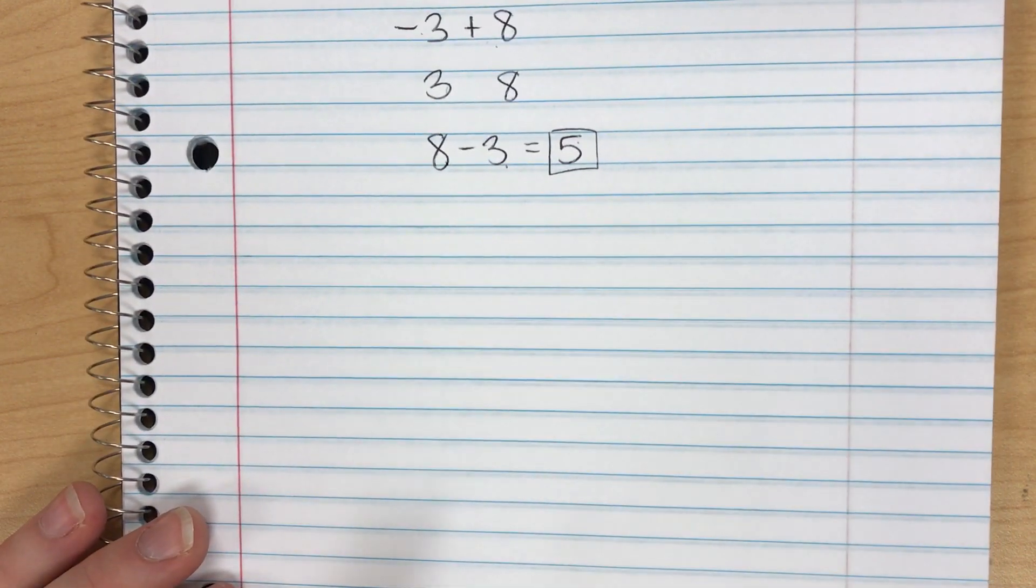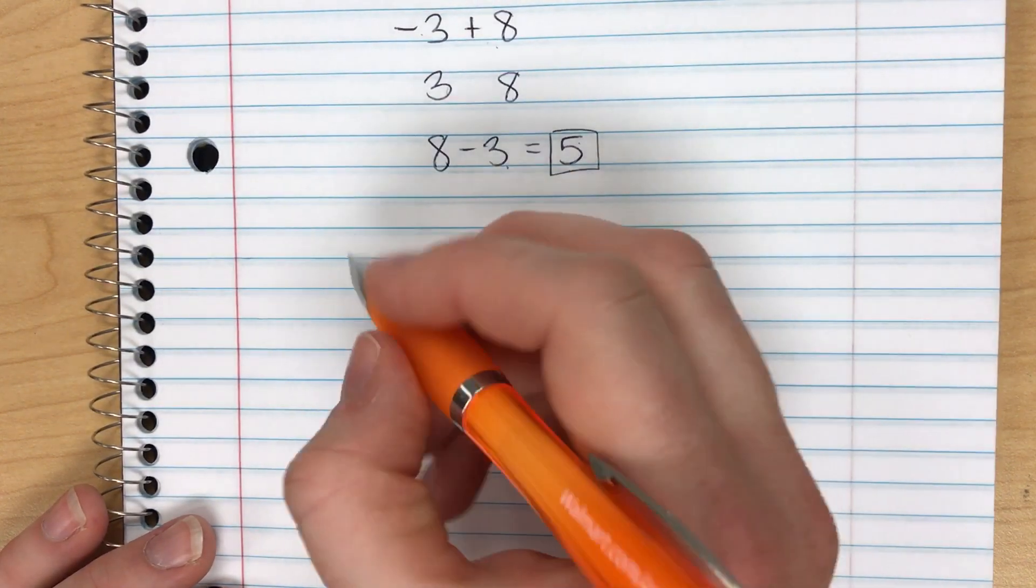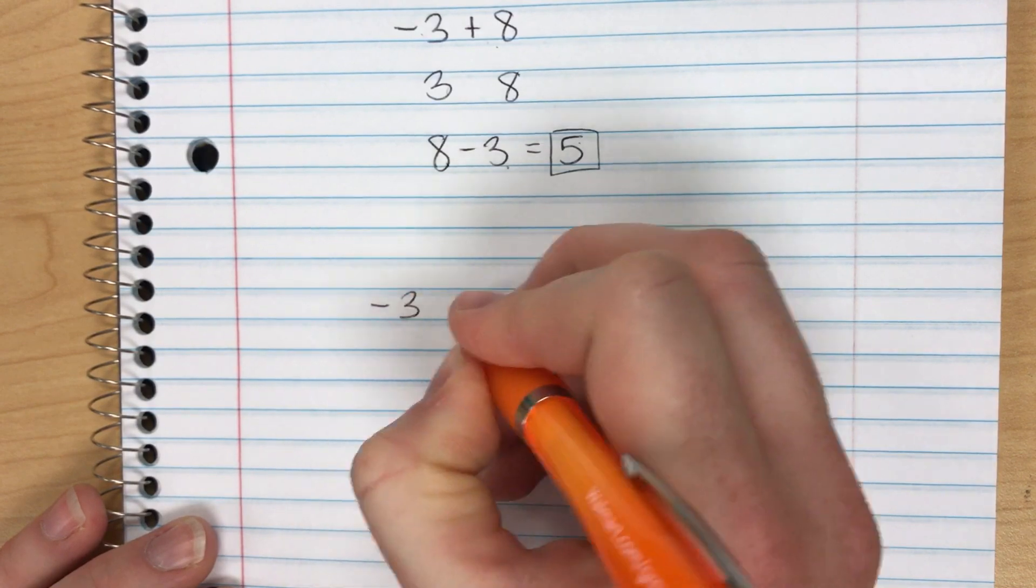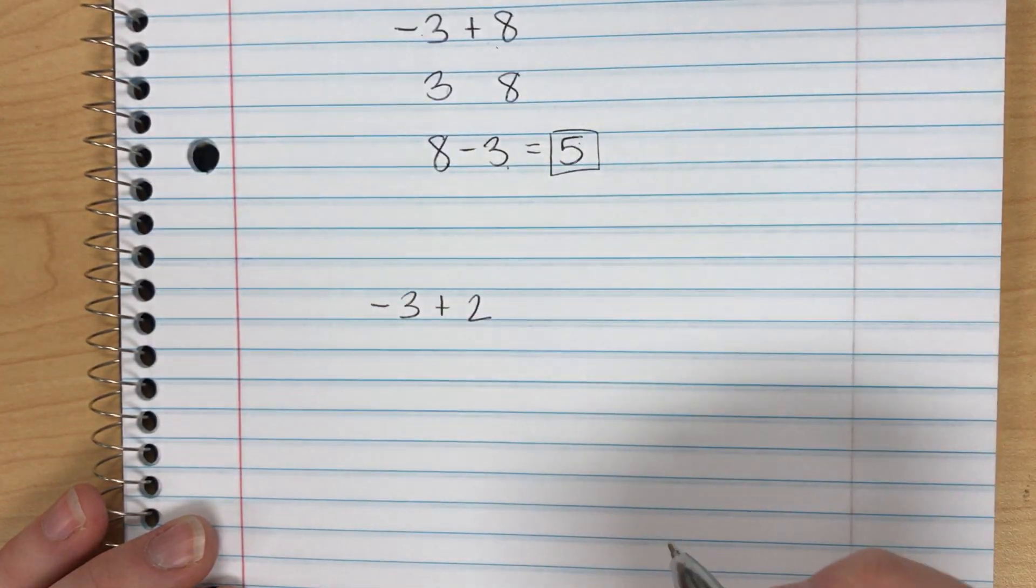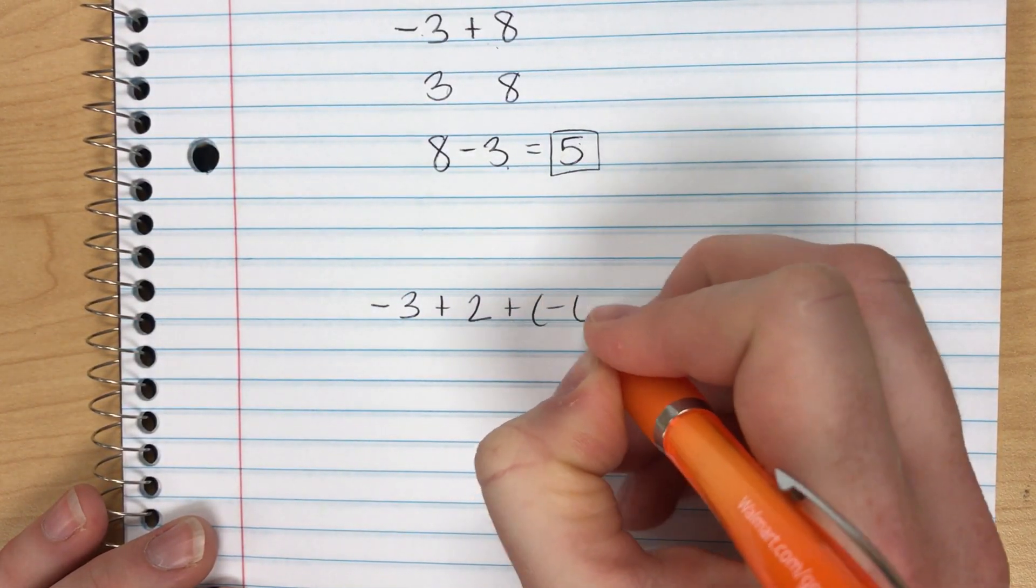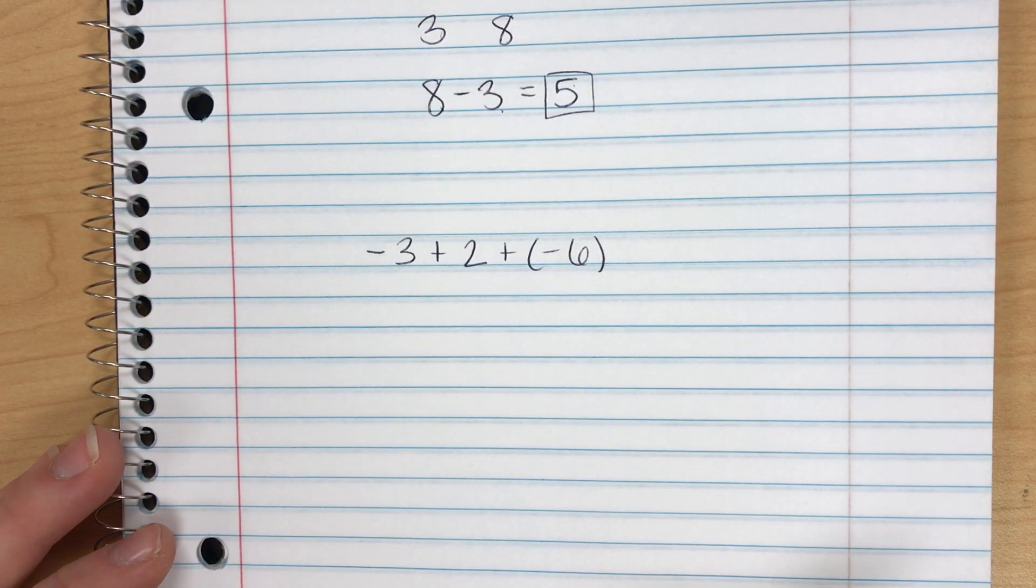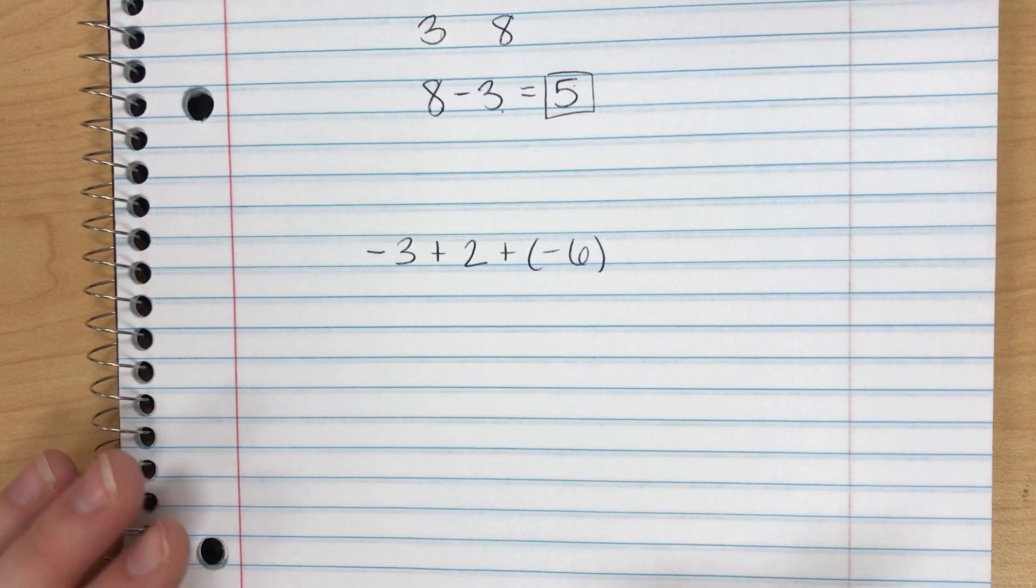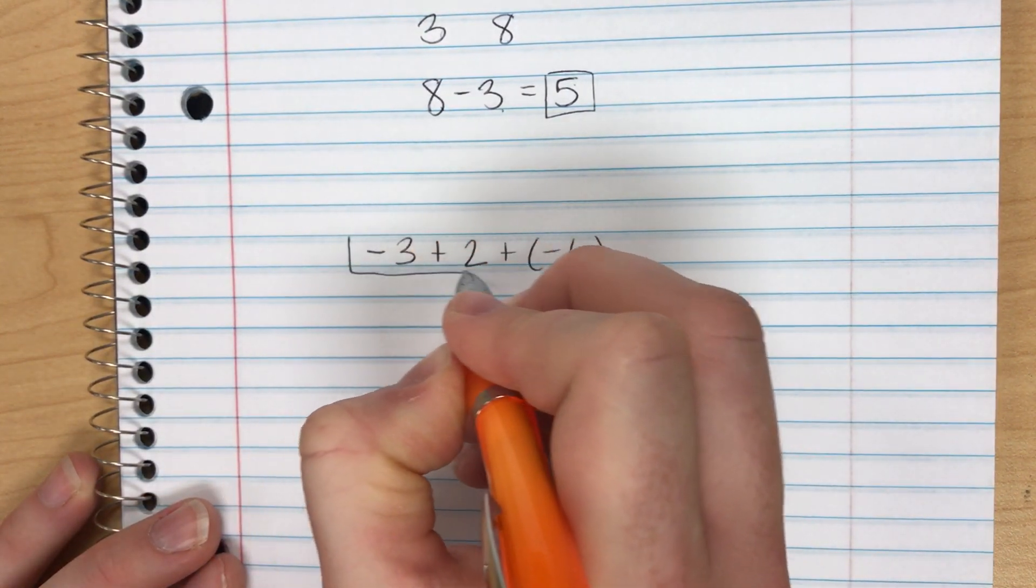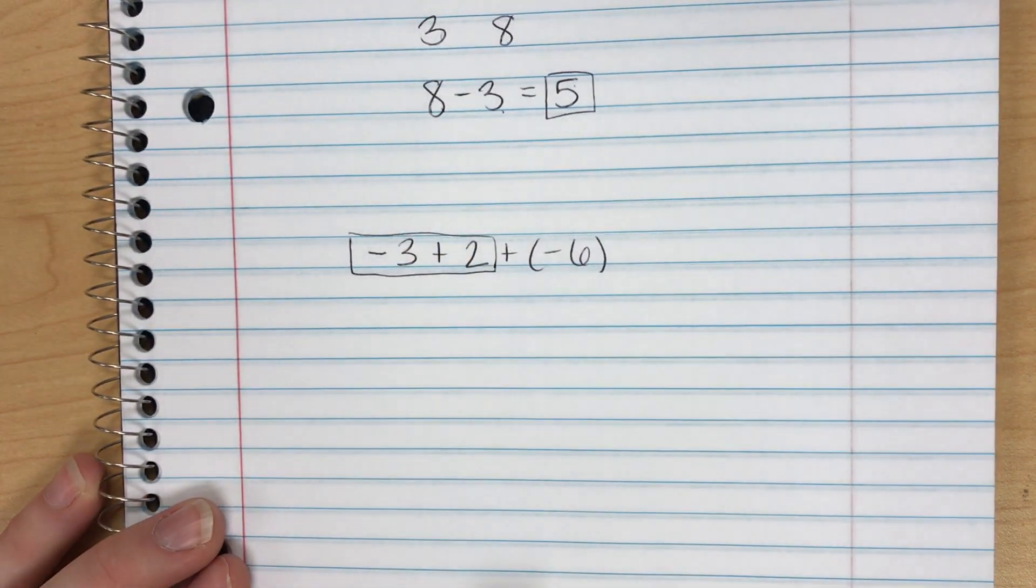What about if I'm adding several things and the signs are all different? Let's say I have negative 3 plus 2 plus negative 6. What I want to do first is just isolate part of the problem and follow those rules. So let's isolate negative 3 plus 2 and focus on that.